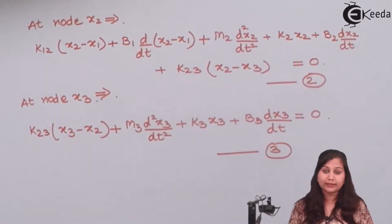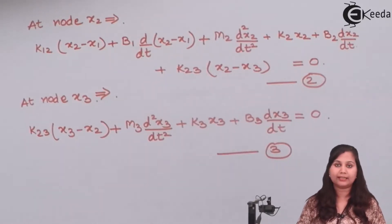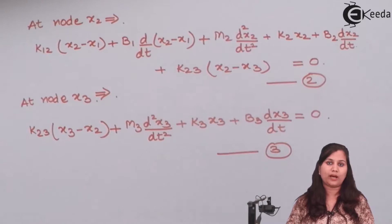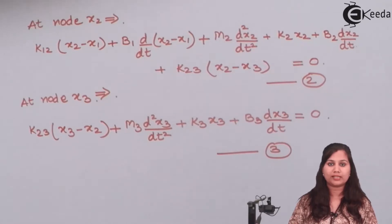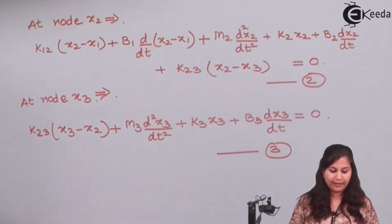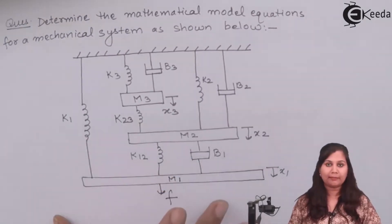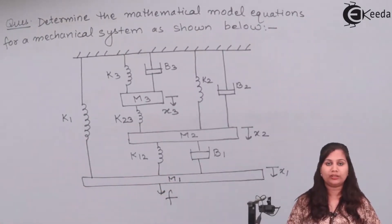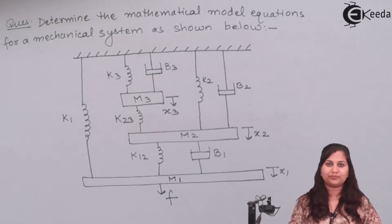The mathematical model of this system is the set of nodal equations at the three nodes x1, x2, and x3. In this problem we found the mathematical model by first drawing the nodal diagram and then writing the nodal equations from it. I hope this problem is clear to you — thank you.